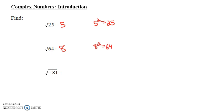Now, the square root of negative 81 — what would that be? Notice it wouldn't be 9, because 9 squared gives you 81. But it also wouldn't be minus 9, because minus 9 times minus 9 is also positive 81. So, is it possible to take the square root of a negative number? It turns out there's no real number that has the property that if you square it, you get negative 81.